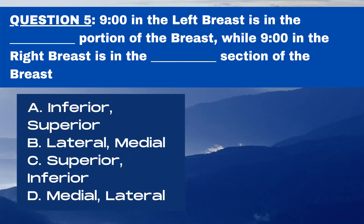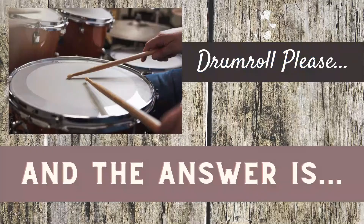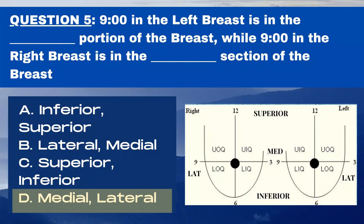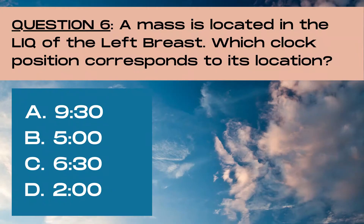Question 5. Nine o'clock in the left breast is in the blank portion of the breast, while 9 o'clock in the right breast is in the blank section of the breast. A inferior and superior, B lateral and medial, C superior and inferior, or D medial and lateral? The answer is D, medial and lateral. Note: in the right breast, 9 o'clock is in the lateral position of the breast, while in the left breast, 9 o'clock is in the medial section of the breast.